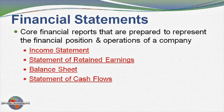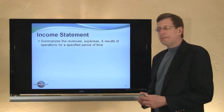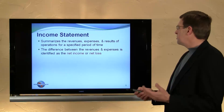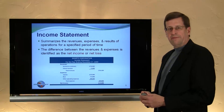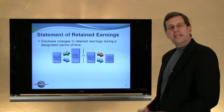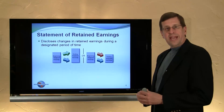The four core financial statements are the income statement, the statement of retained earnings, the balance sheet, and the statement of cash flows. The income statement reports the revenues and expenses and results of operations for a particular company. The difference between revenues and expenses is termed net income. Here we have an example for Quartz Corporation. Note the heading shows the corporation name, the statement name, and the time period — for the year ending December 31, 20X9. Total revenues were $765,000, total expenses were $650,000, and net income was $115,000.